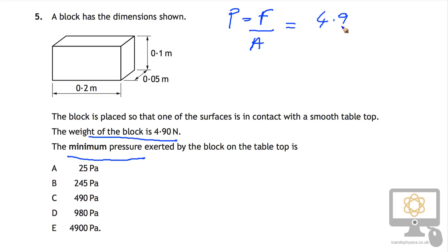So that can go on the top line of the equation. The bottom line is the area, so we want the minimum pressure. If we want this to be small, we need this to be big. The area needs to be as big as it can possibly be.